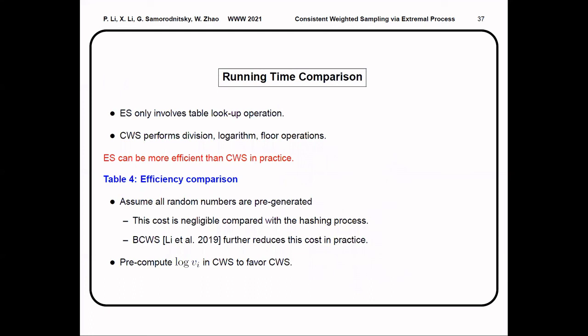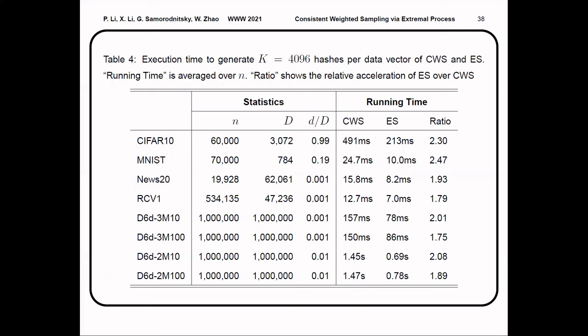Furthermore, ES also has some improvement in efficiency compared with CWS because it only involves stable lookup operation, while CWS performs many complicated mathematical operations. We see that ES can be two times faster than CWS.